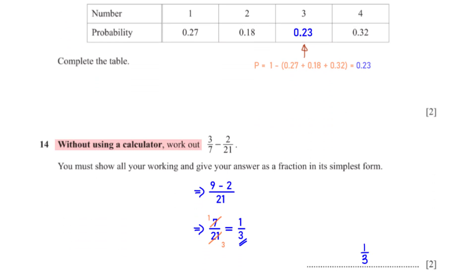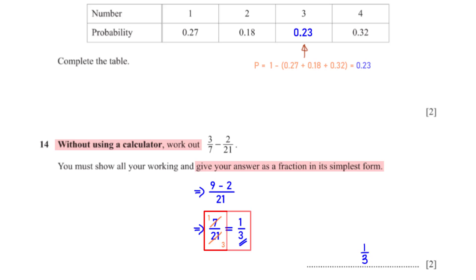Without using a calculator, work out 3/7 minus 2/21. Show all working and give the answer as a fraction in its simplest form. The LCM of 7 and 21 is 21. For 3/7, we multiply numerator by 3 to get 9/21. For 2/21, the numerator stays as 2. So 9 − 2 = 7 over 21, which simplifies to 1/3.